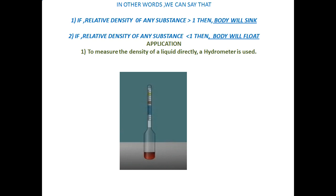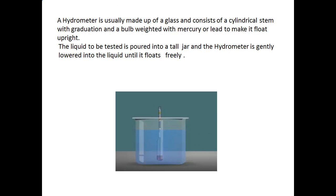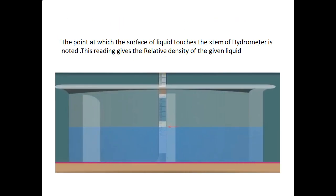Now coming to the applications of this property. The first application is that to measure the density of a liquid directly, we use a hydrometer. A hydrometer is usually made up of glass, consists of a cylindrical stem with gradation, and a bulb weighted with mercury or lead to make it float upright. The liquid to be tested is poured into a tall jar and the hydrometer is gently lowered into the liquid until it floats freely. The point at which the surface of the liquid touches the stem of the hydrometer is noted — this reading gives the relative density of the given liquid.